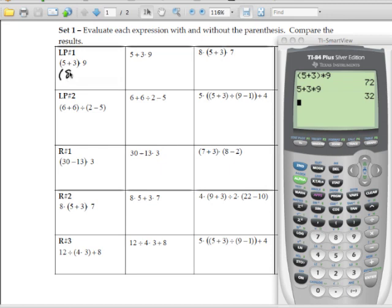And then multiply that by 9. 8 times 9 is 72, and that's what we came out with when we entered that in first.